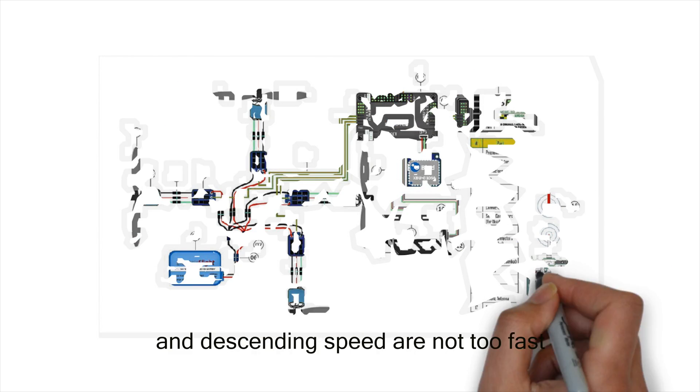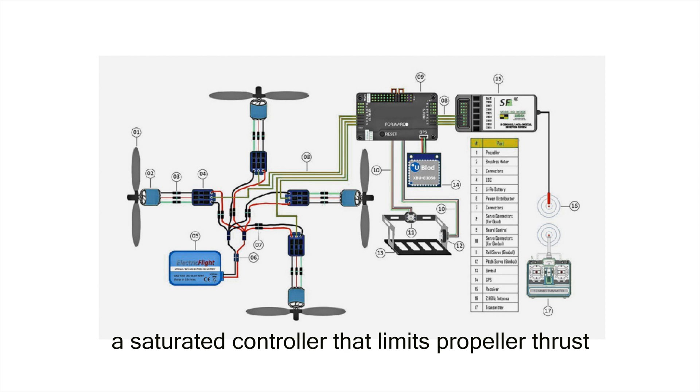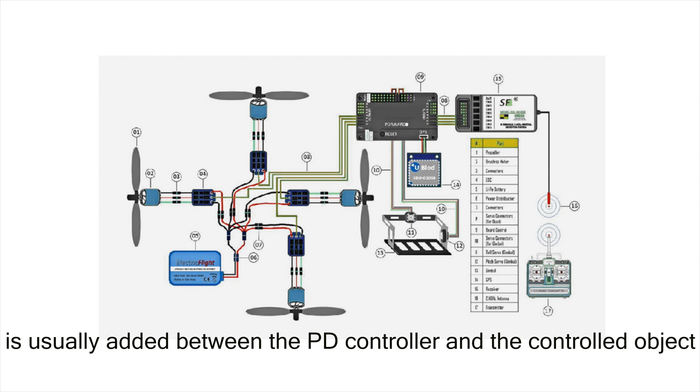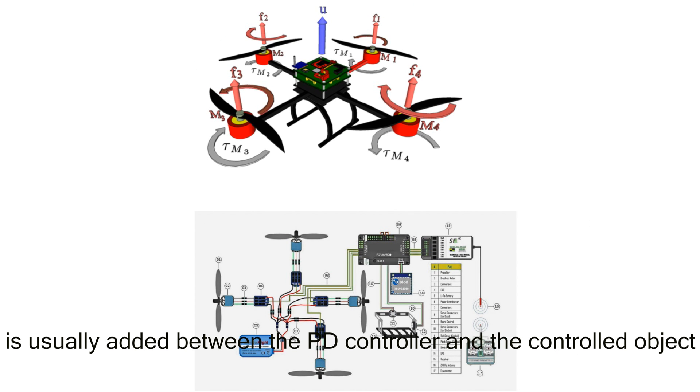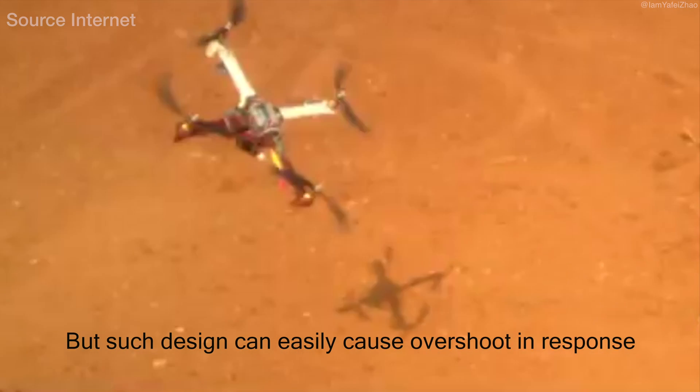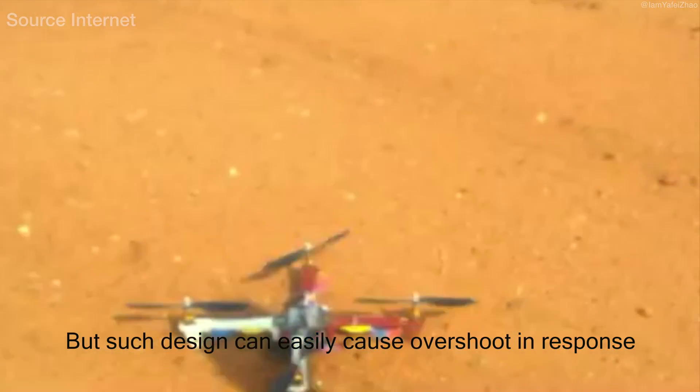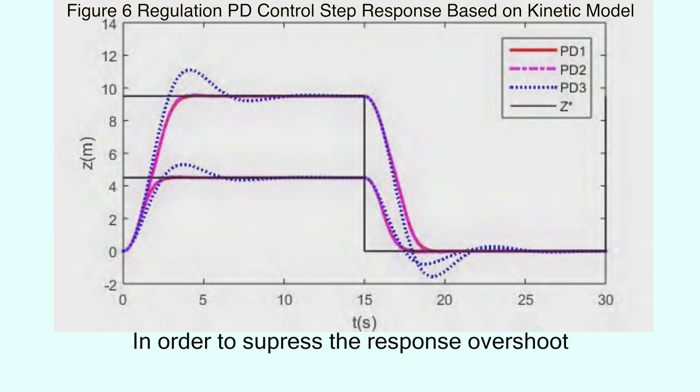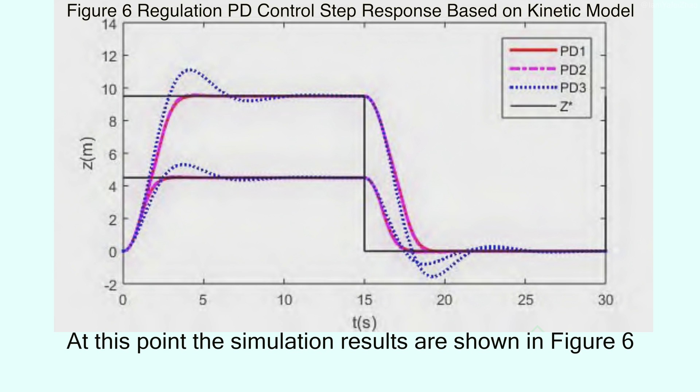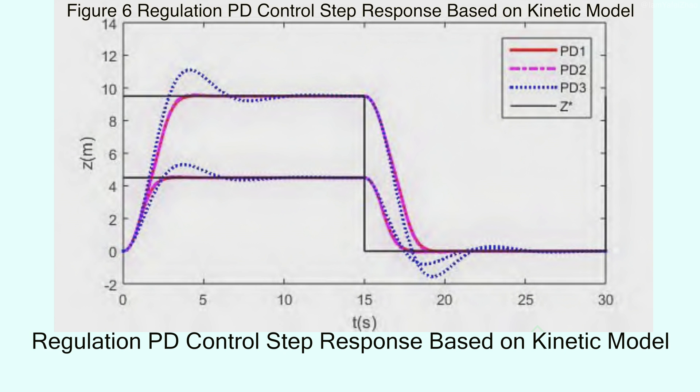This is because the output of the drone's motor can be limited during the actual flight and in order to ensure that the UAV's rising and descending speed are not too fast. A saturated controller that limits propeller thrust is added between the PD controller and the controlled object. But such design can easily cause overshoot in response and reduce system stability. In order to suppress the response overshoot caused by input saturation, a speed limit compensation part is added between the PD controller and the controlled object. At this point, the simulation results are shown in figure 6.